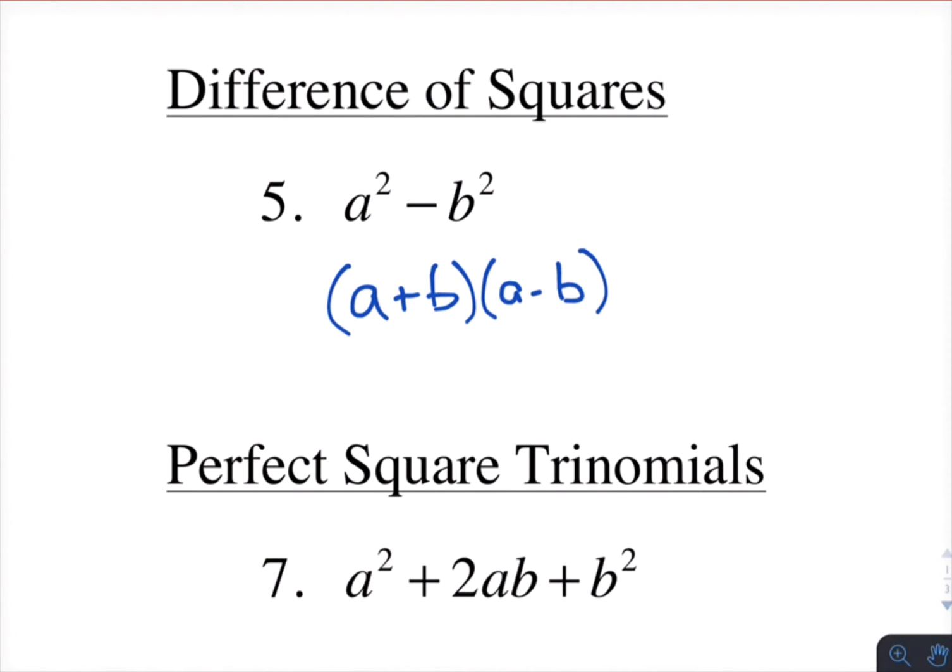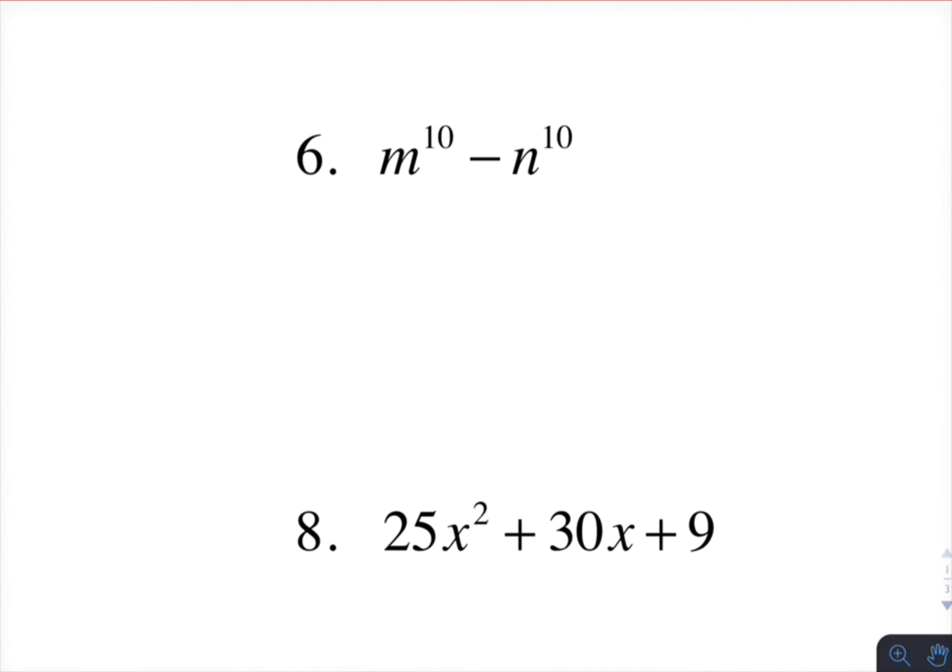Foil that out, and you'll get a squared minus b squared. So over here, difference of squares. Let's go positive first. Let's stay positive. m to the fifth minus n to the fifth.